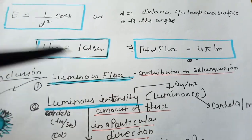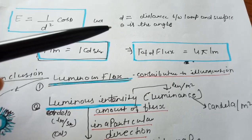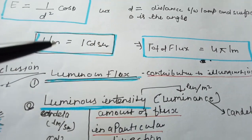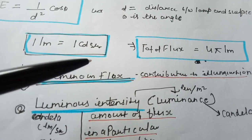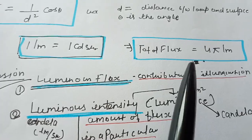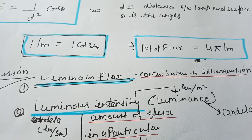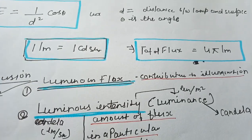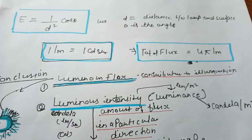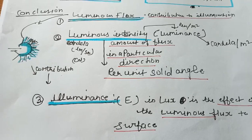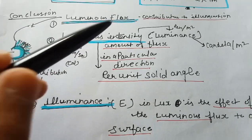In the inverse square law formula, d is the distance between the lamp and the surface, and theta is the angle. One lumen equals one candela-steradian. Total flux can also be calculated as 4π lumens. This formula comes from the inverse square law, and together with the lumen method we can calculate illumination values.